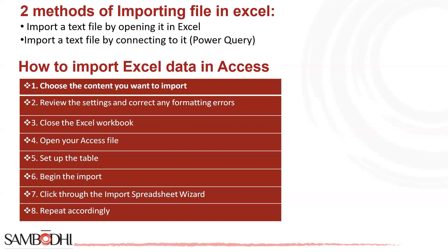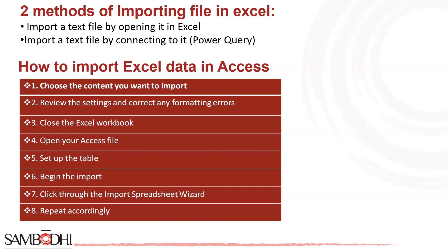How to import Excel data into Access. Here are eight steps you could follow. Step one: choose the content you want to import. Open Excel and find the worksheet containing the first set of data you want to import. You can only import worksheets, not entire workbooks, so remember to select each worksheet in the correct order so your Access document is clean and orderly. If you want to import a specific data range, select the cells you'd like to move, right-click on your selection, find the option to name the range, type the name, and click OK.